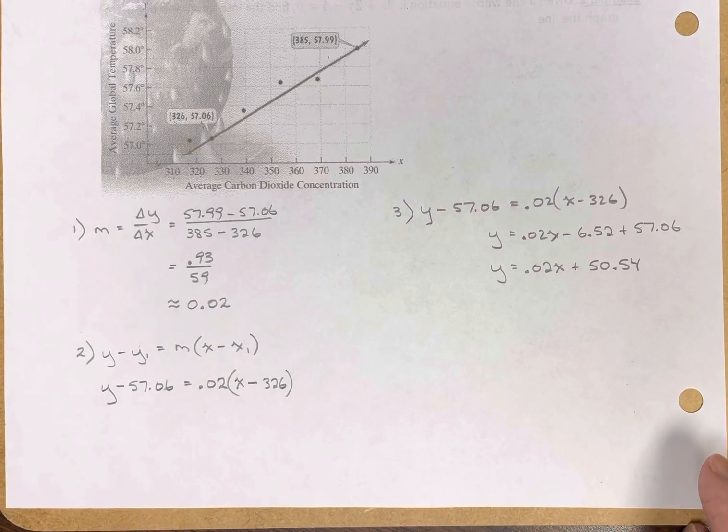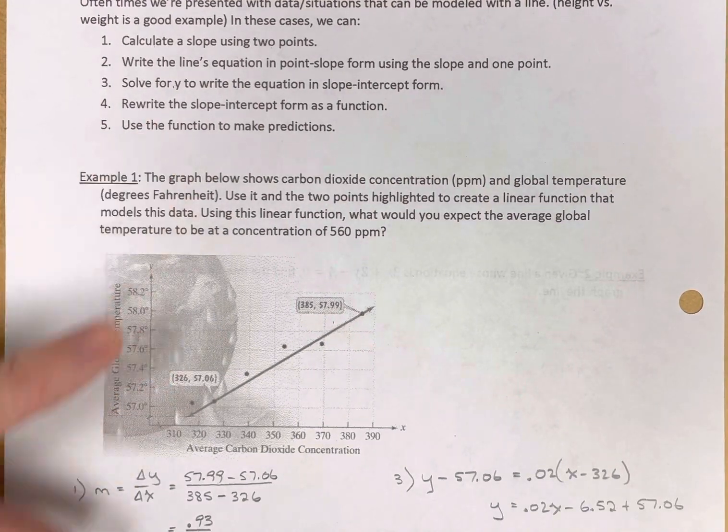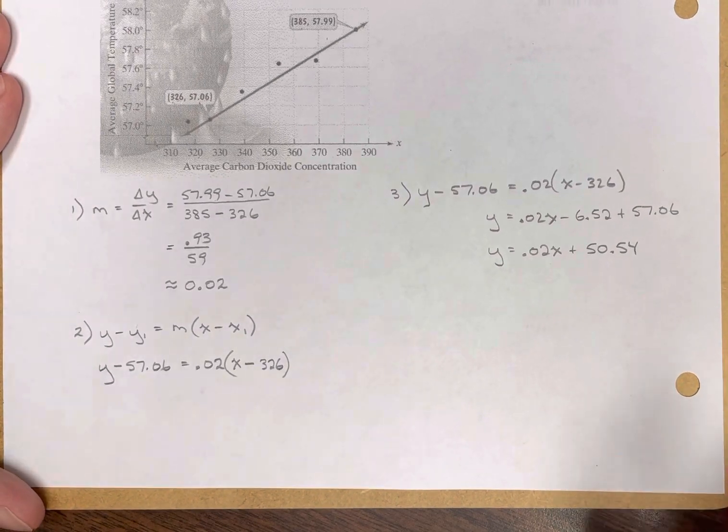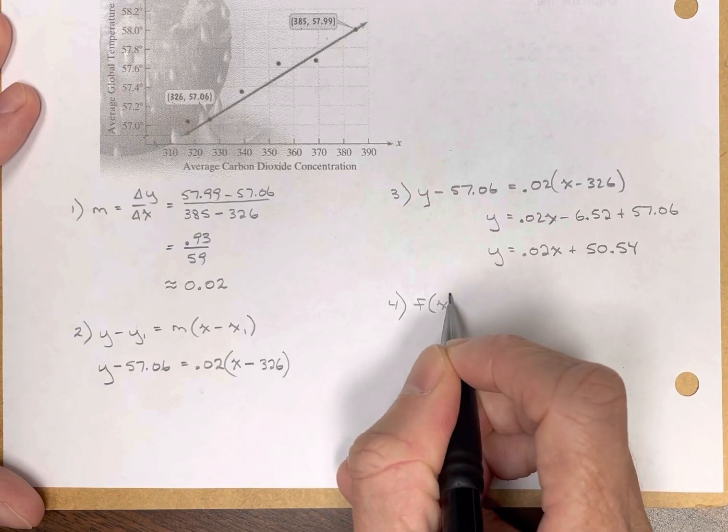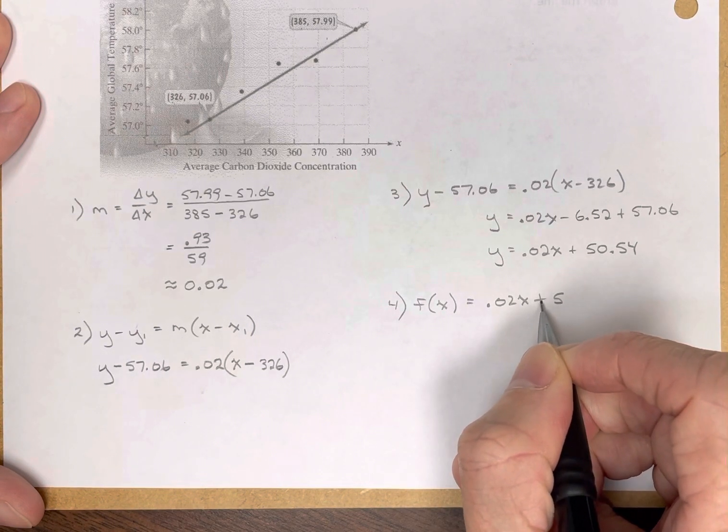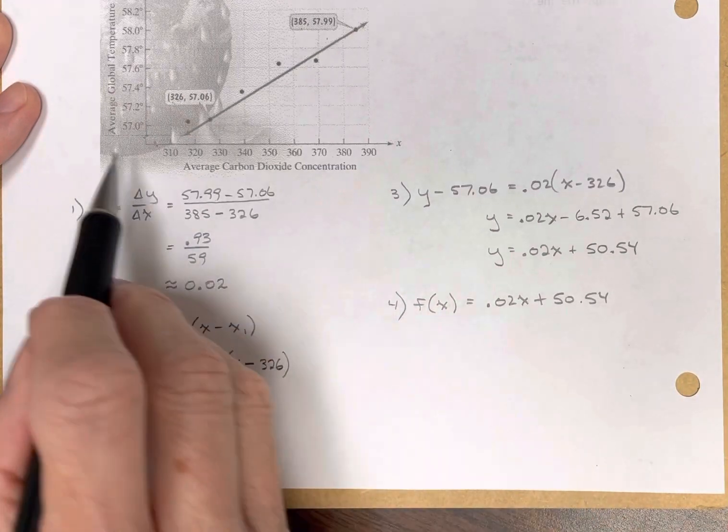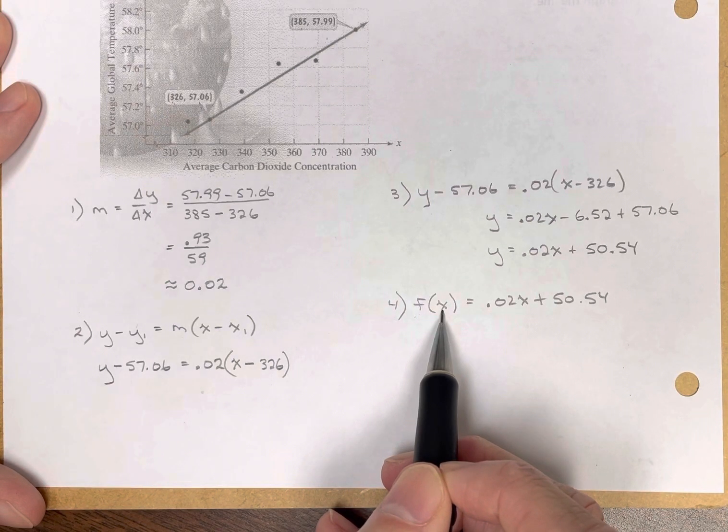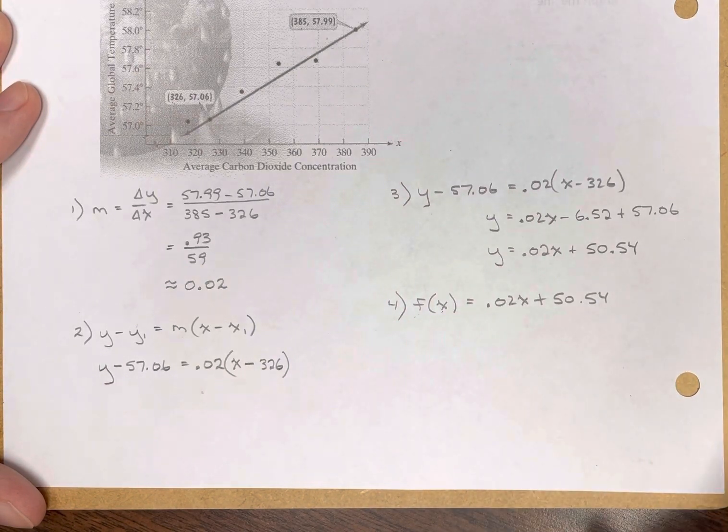And so now step four tells me, let's rewrite this as a function. That's easy. A function is just replace the y with an f of x essentially. So four says that's the same as the function of x is equal to 0.02x plus 50.54. So this is telling me global average temperature is a function of the average carbon dioxide concentration. And this is how I calculate the global average temperature.